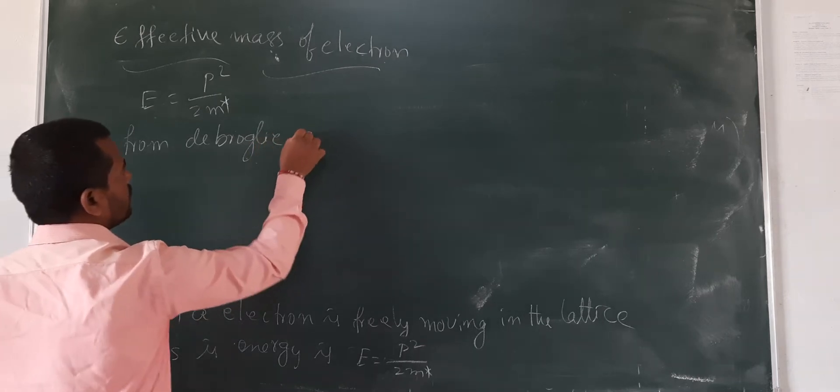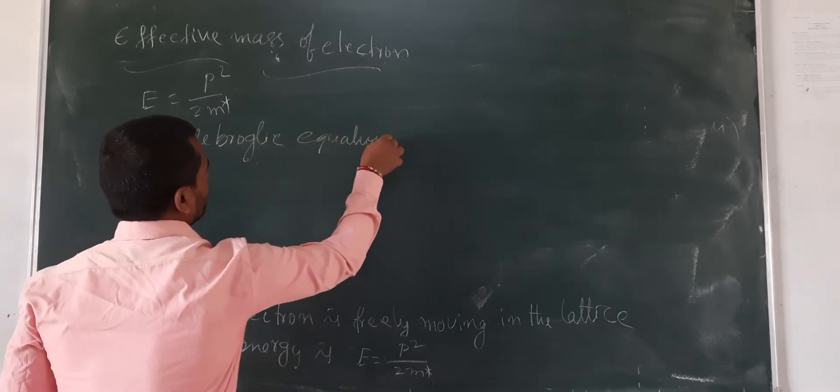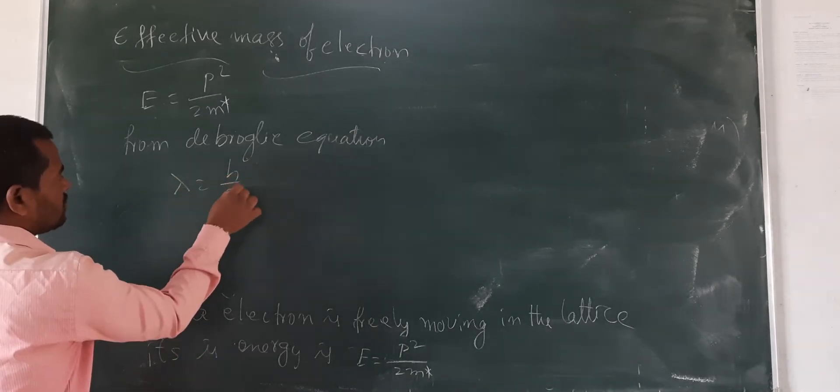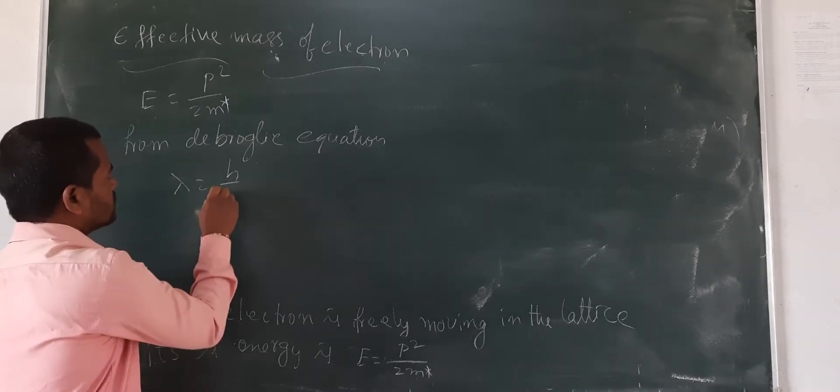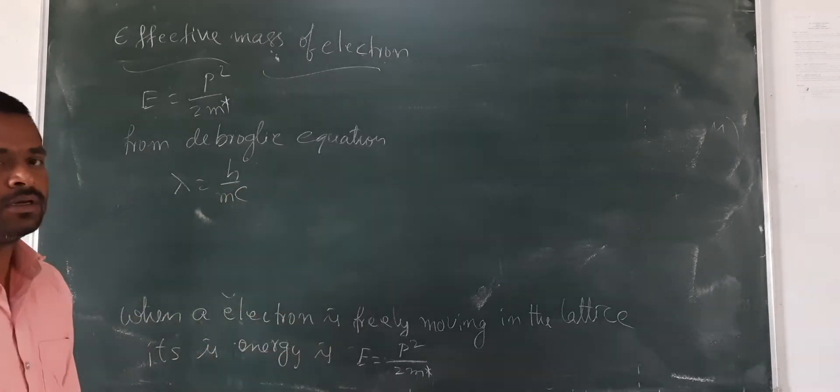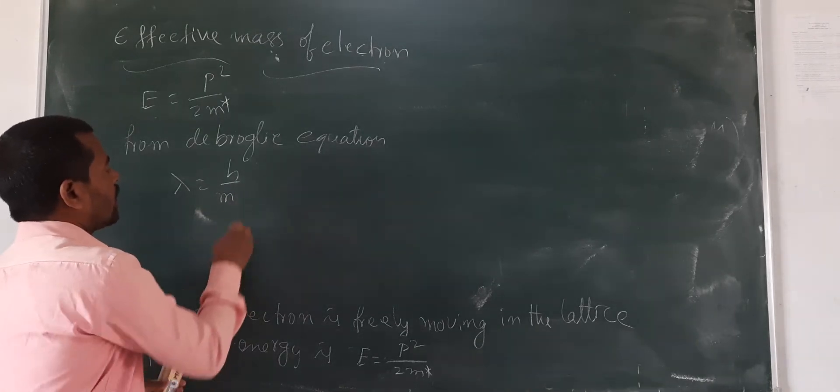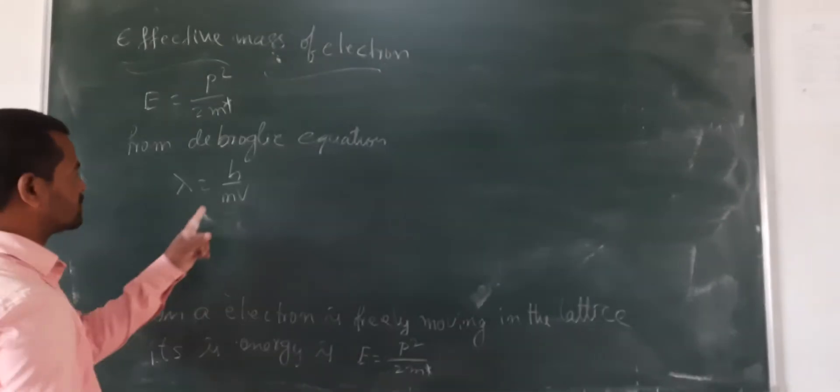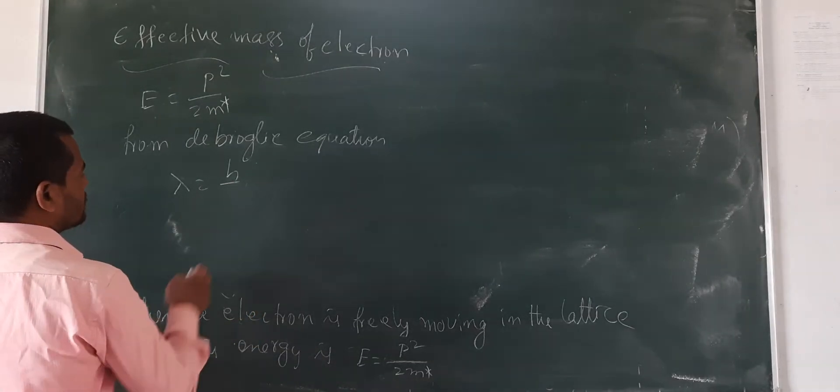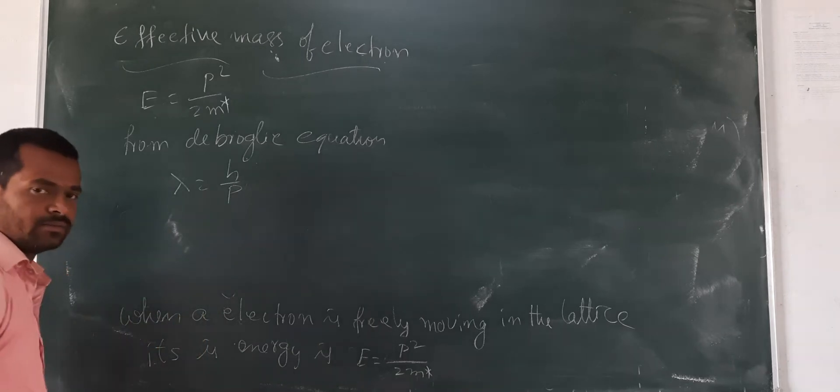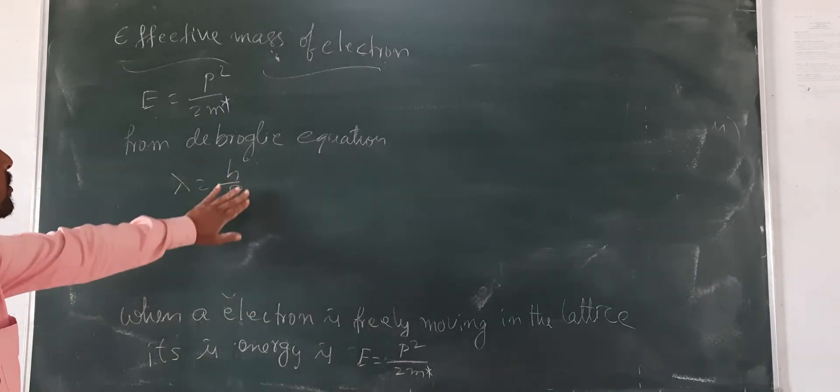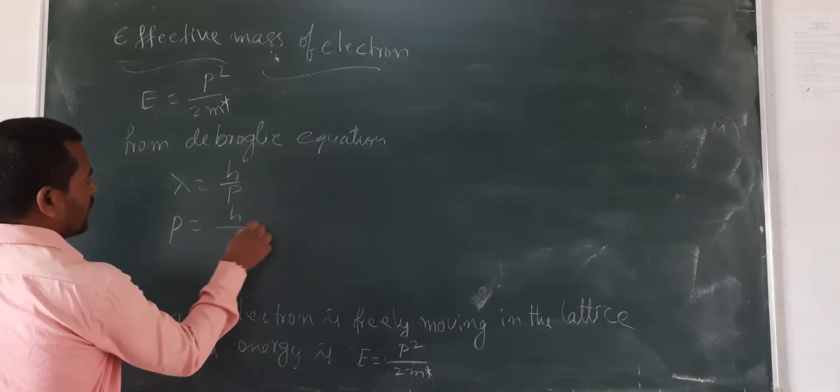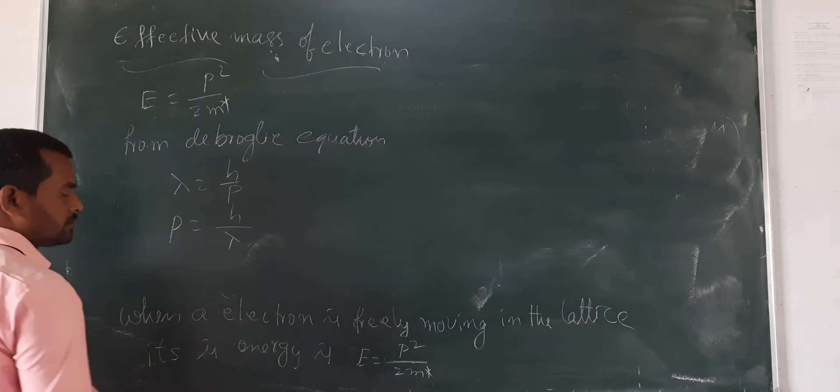De Broglie equation, what is the group equation? Lambda is equal to h by p, or in general h by mc. For any object, any object that is moving, for every mass, product of mass and velocity can be written as p only, momentum.